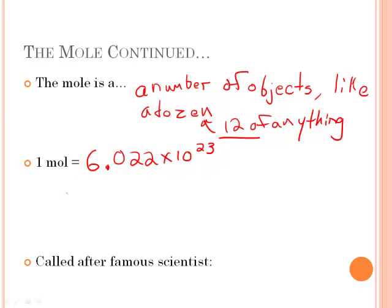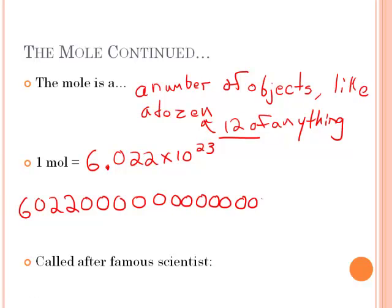To fathom really how big that number is, let me write it all the way out. It's basically 6.02 followed by 23 placeholders — so 1, 2, 3, 4, 5, 6, 7, 8, 9, 10, 11, 12, 13, 14, 15, 16, 17, 18, 19, 20, 21, 22, 23 zeros. That is the big number that the mole is. In fact, this number is 600 sextillion.